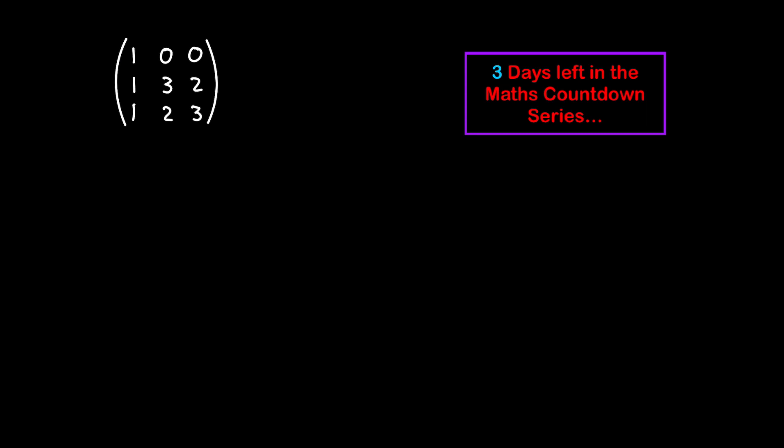We need an n by n square matrix. In order to solve for our eigenvalue, we'll be using this following equation. The determinant of lambda, which is going to be what we're solving for, which is going to be our eigenvalue, times by the identity matrix.